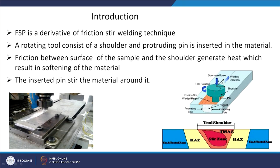Now suppose you have started moving this tool at a certain traverse speed. The material from the front will be taken back where the cavity is created because of the movement. When the tool is moving it will create a cavity behind it, so this rotation will take the material from the front and deposit it at the back. This material flow is a very complex phenomenon; in layman's language, you are continuously bringing front material to the back as the tool moves.